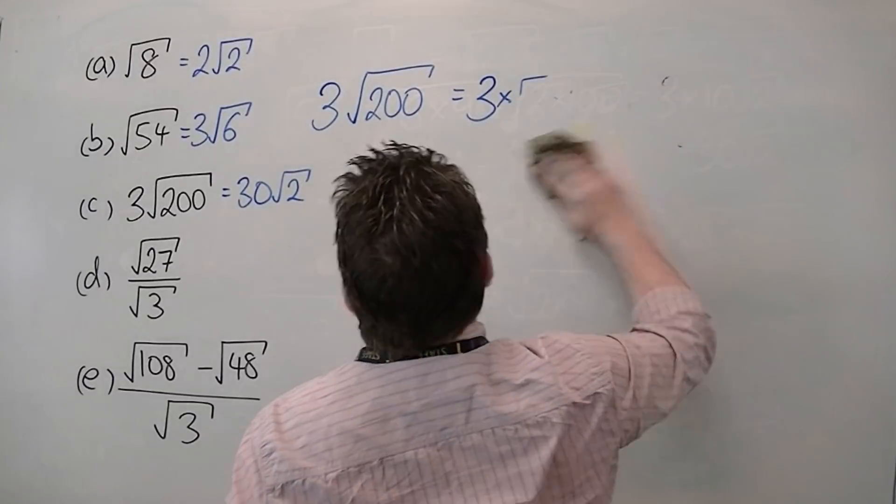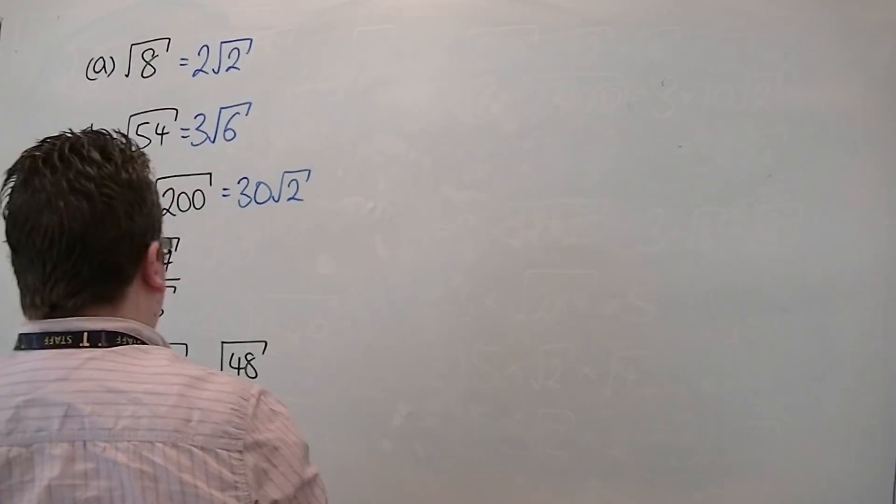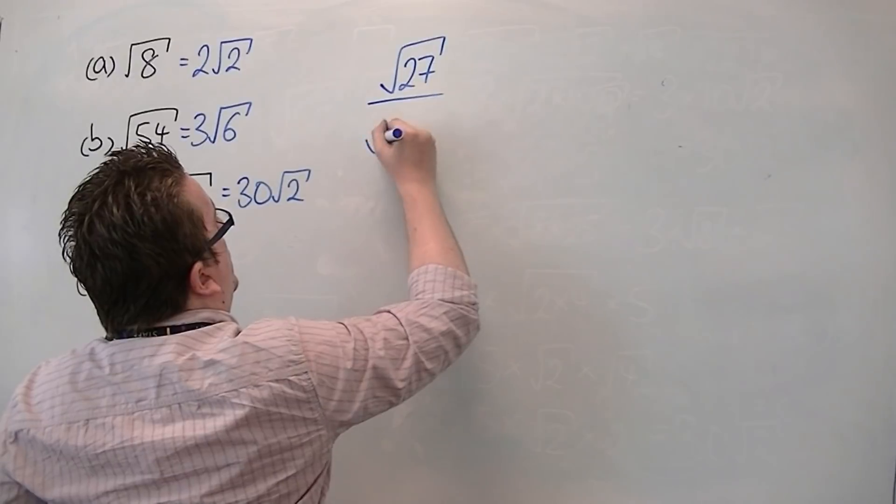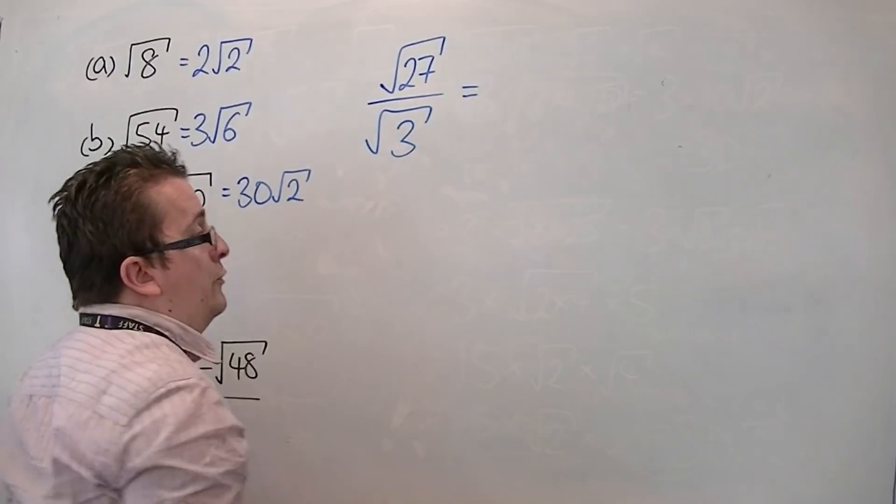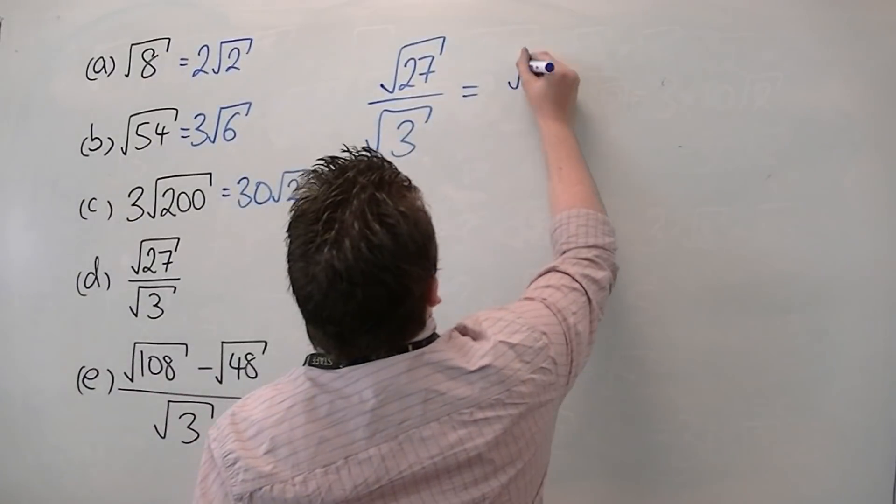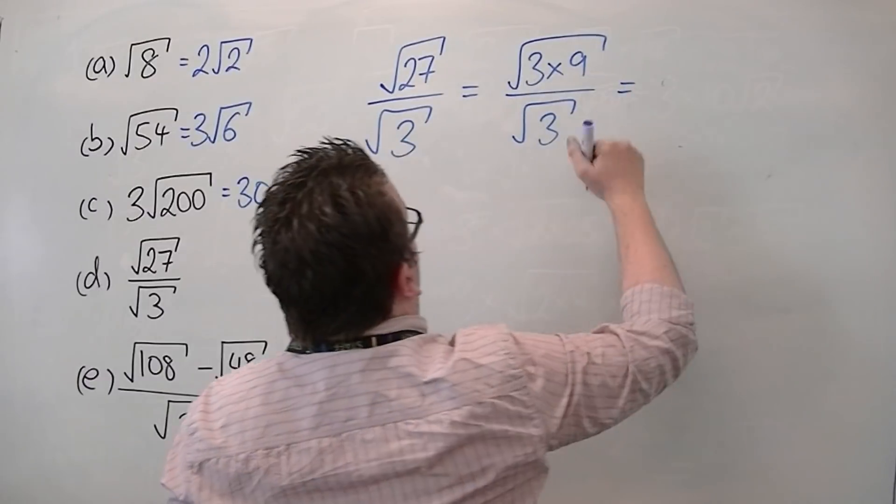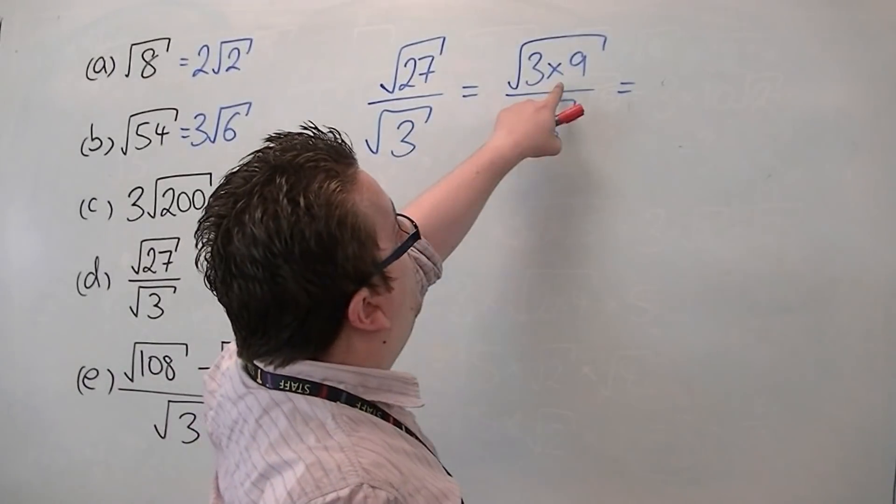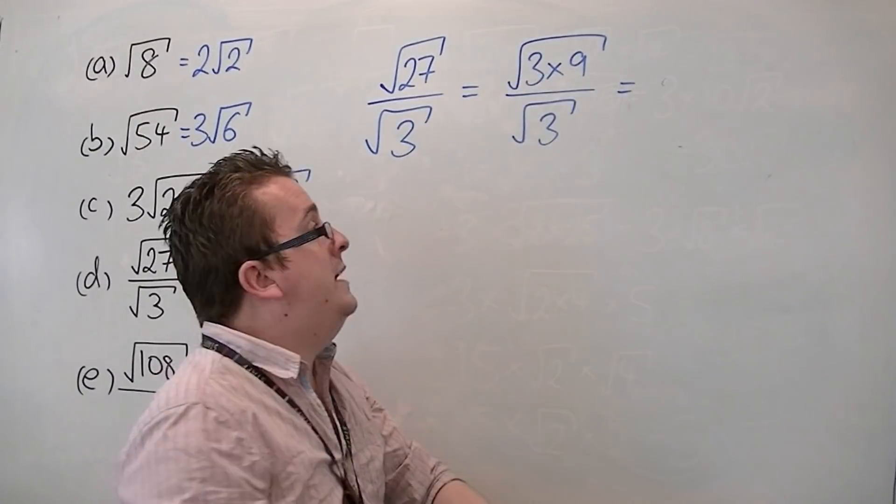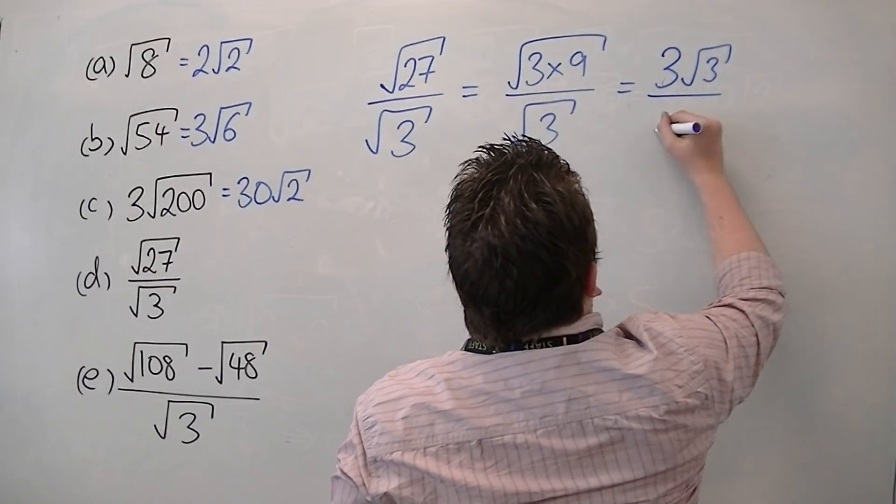Now, what have we got next? We've got root 27 over root 3. So root 27 over root 3. Now, 27, I know that 9 goes into that. So we've got square root of 3 times 9 over root 3. So we should now be able to see that we've been able to split that square root into root 3 and root 9. Root 9 is 3, so we can write that as 3 root 3 over root 3.